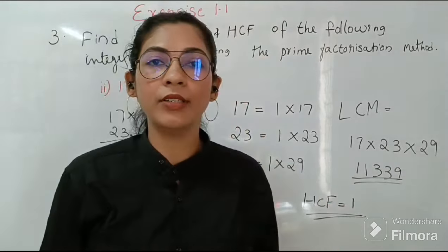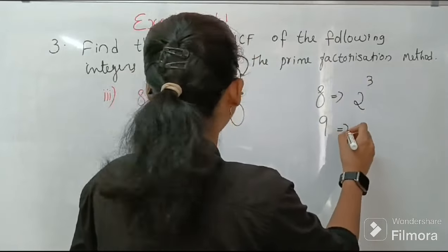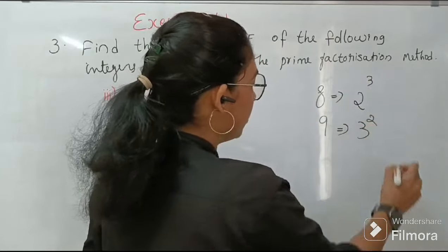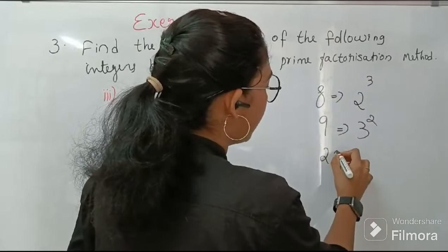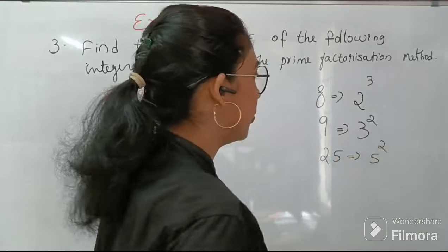So the last one is 8, 9 and 25. So let's factorize. 8 can be written as 2 to the power 3 and 9 can be written as 3 to the power 2 and 25 is 5 to the power 2.